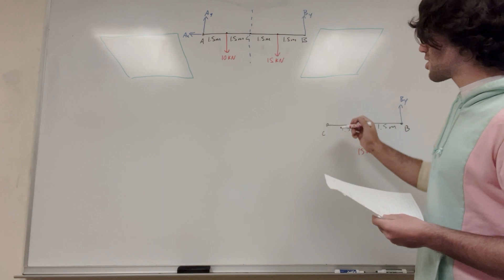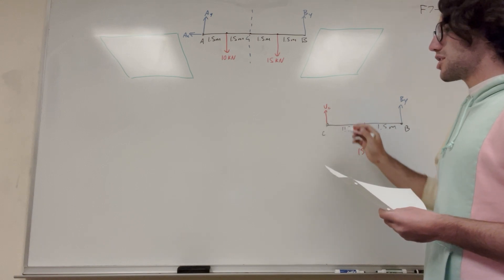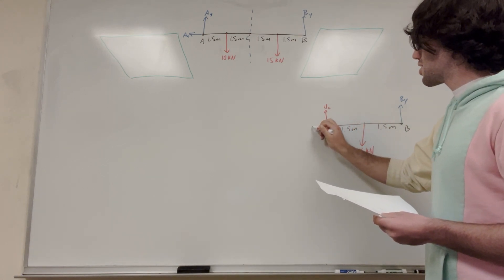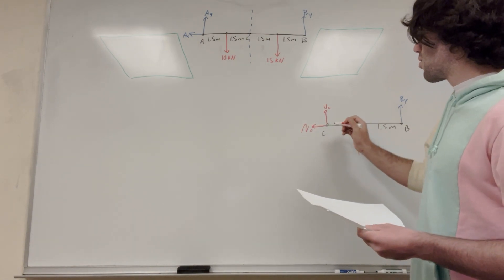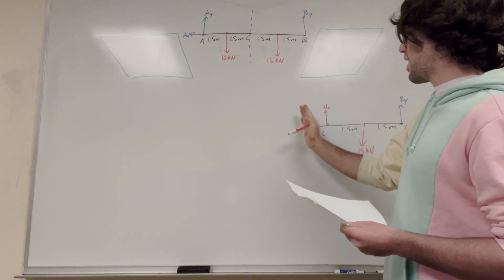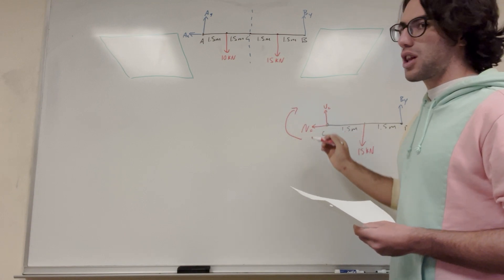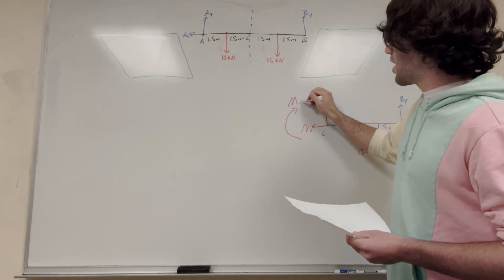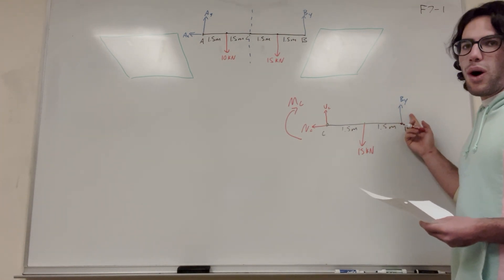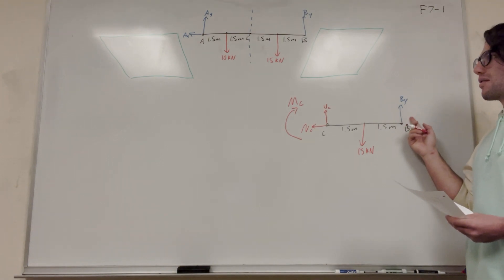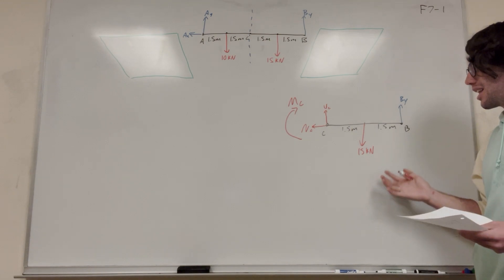At C we're going to have the shear force. Because we took the cut on the right side, the shear force V_c is pointing upward. We also have the normal force at C pointing outward. The moment at C — when taking the cut on the right side — points clockwise. One thing we still need is B_y, which we'll need for the force equations.